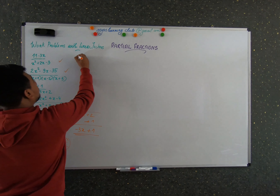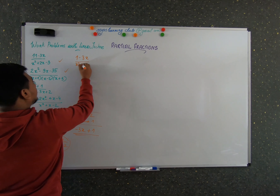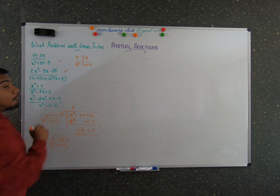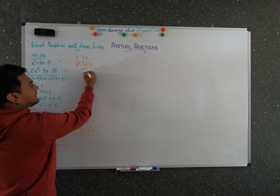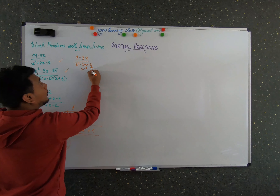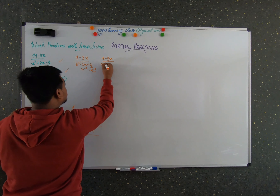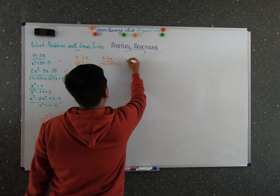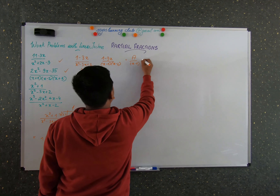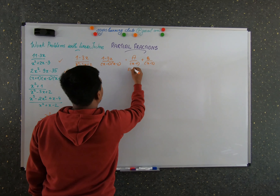So now let's do the partial fraction for this problem. We have 1 minus 3x by (x squared minus 3x plus 2). Remember the formula x squared minus sx plus p: here minus 2 and minus 1 give a sum of minus 3 and a product of 2. So you can write this as 1 minus 3x by (x minus 1)(x minus 2). Now break it into the form A by (x minus 1) plus B by (x minus 2), and do cross multiplication to get A(x minus 2) plus B(x minus 1).